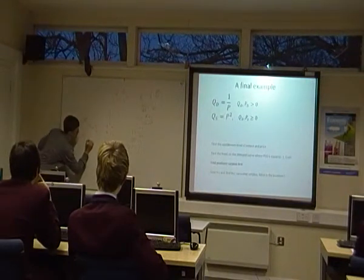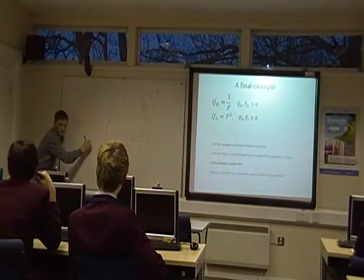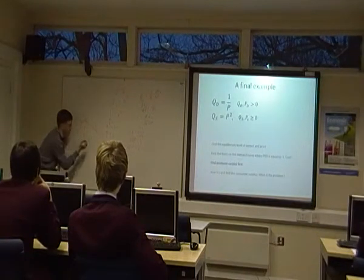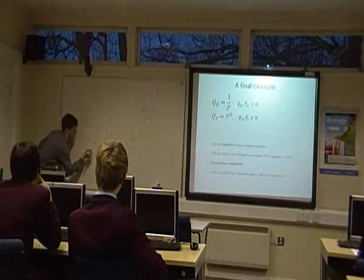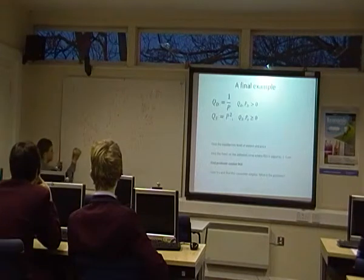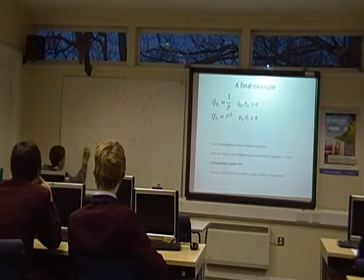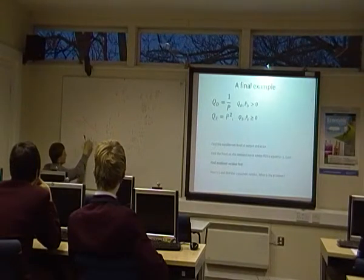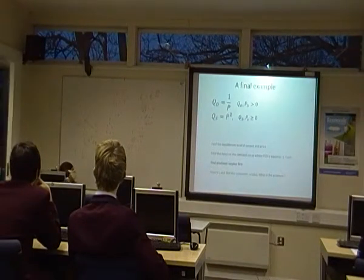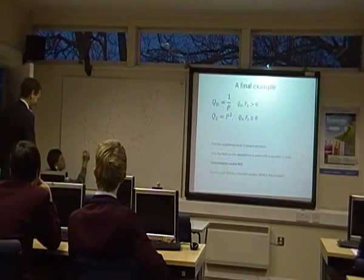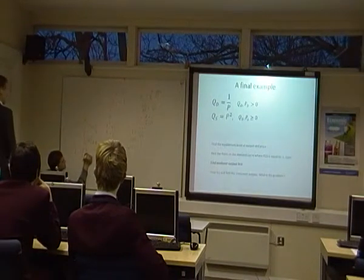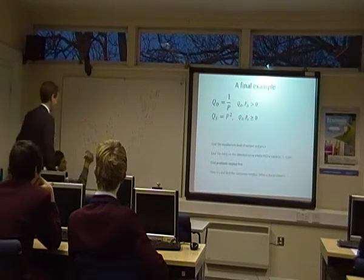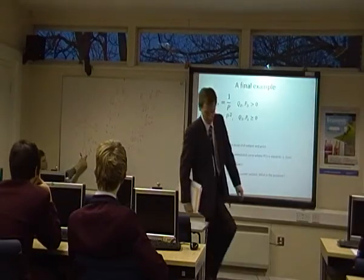So what we can say is that P equals the square root of Q. And when we do the integral of Q to the half, square root is power to the half. So we're going to get 1 minus, I'll put my bounds in. This isn't going to make much sense to year 11. Add 1 to the power and divide by the new power.